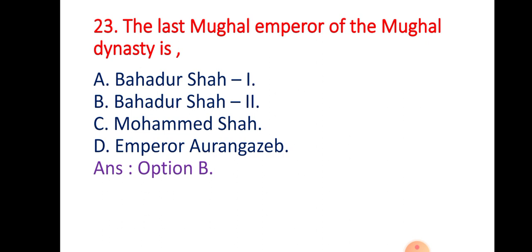Question 23: The last Mughal emperor of the Mughal Dynasty is — Option A: Bahadur Shah I; Option B: Bahadur Shah II; Option C: Muhammad Shah; Option D: Emperor Aurangzeb. The right answer is Option B — Bahadur Shah II. He was the last Mughal emperor. After the 1857 Great Indian Revolt, he was sent to Burma where he died in 1858.